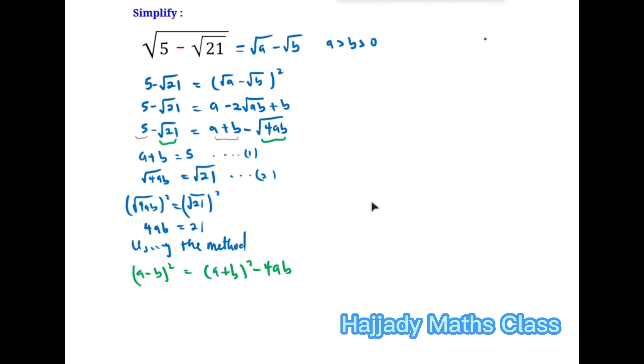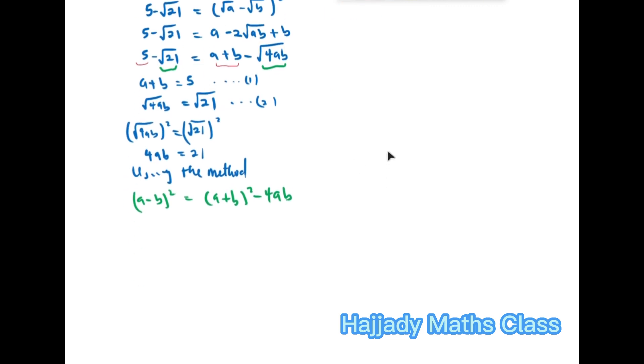And by using this, we're going to have (A - B)² = (A + B)² - 4AB. Don't forget that A + B is the same thing as 5. So we're going to have 5² - 21, which is 4. So this is the same thing as 25 - 21 which is 4.